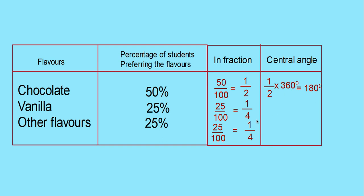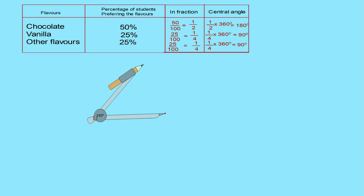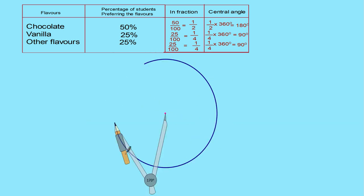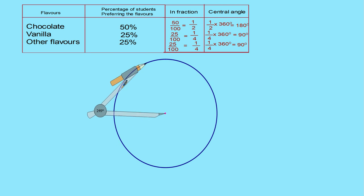Similarly, vanilla is 1 by 4th part, so its central angle is 1 by 4 into 360, which equals 90 degrees. The other flavors are also 90 degrees. Now, using this data, we can draw a pie chart. First, mark a center point and draw a circle. You can take any radius for this circle.